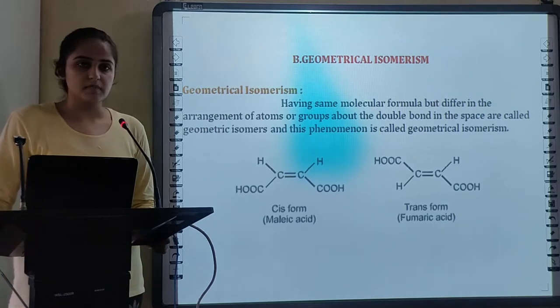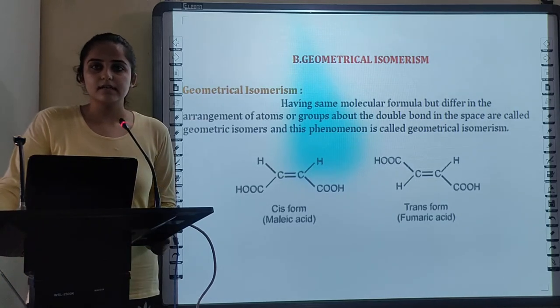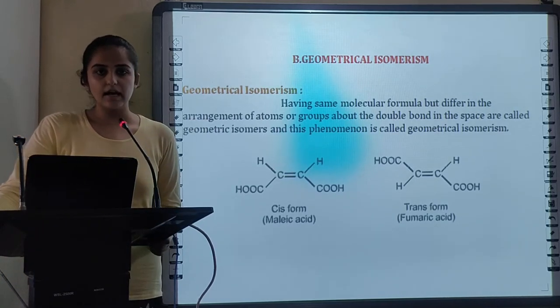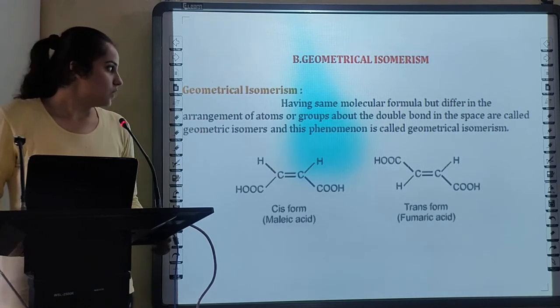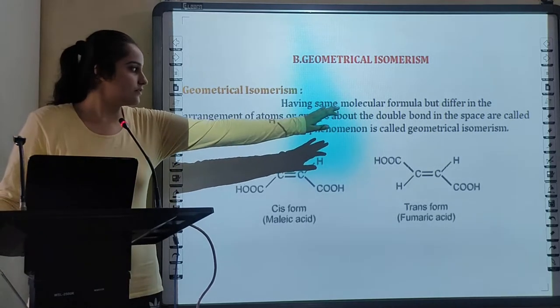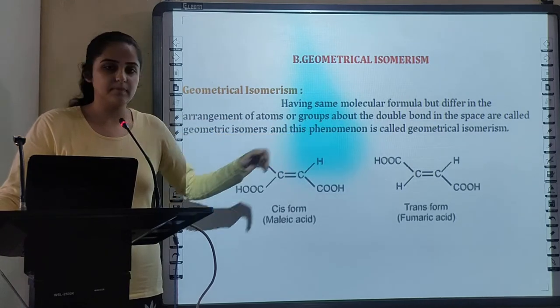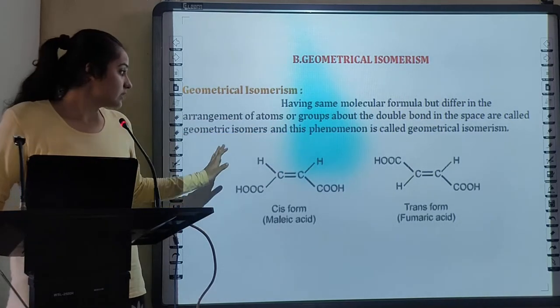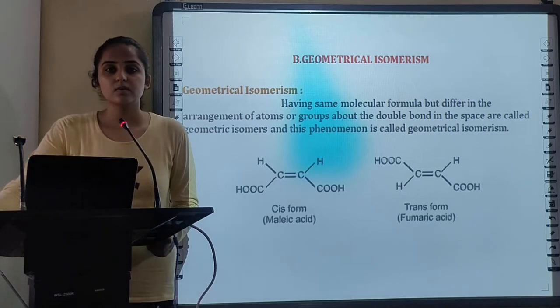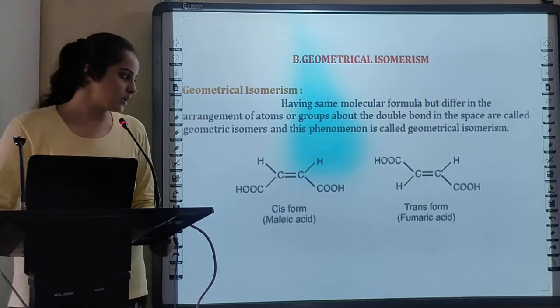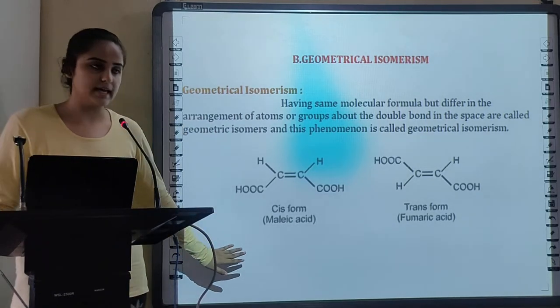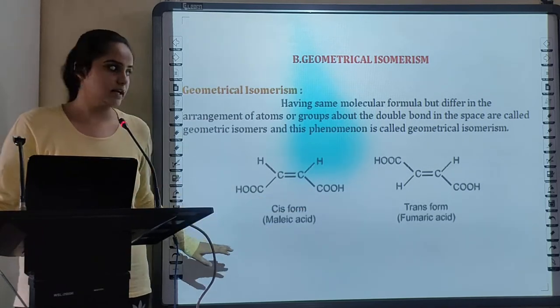Next is geometrical isomers. Geometry, the word itself tells us about the arrangement and isomers same or equal. Having same molecular formula but differ in arrangement of atoms or groups about the double bond in space are called as geometrical isomers and this phenomenon is known as geometrical isomerism. Here are 2 examples: cis form of maleic acid and trans form of fumaric acid.